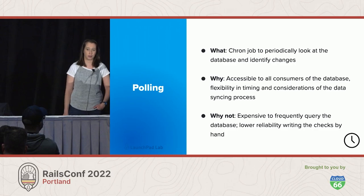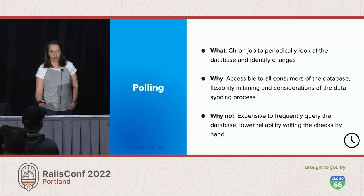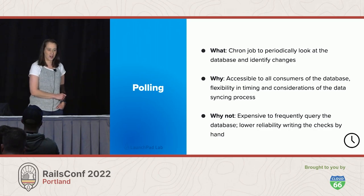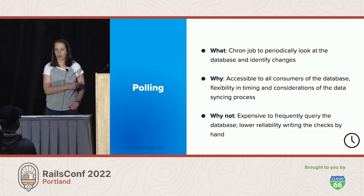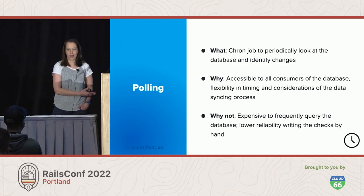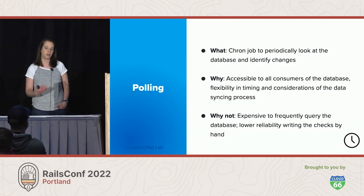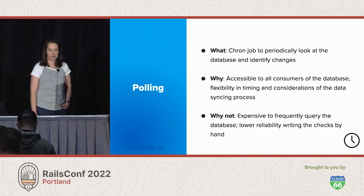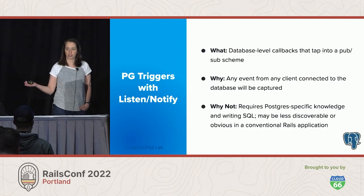On top of that, it's expensive to keep querying the database — I don't need to look at a user table with millions of records every time to understand if a new row got inserted. There are other tools that do a much better job. As I was working on this polling infrastructure, I realized I was looking for both things: I wanted to understand when something changed in the database, like a callback, and the polling made me think of listening and notifying — like a Pub-Sub scheme. With a little help from my teammates, we stumbled across Postgres triggers with Listen/Notify.